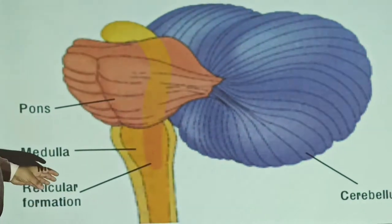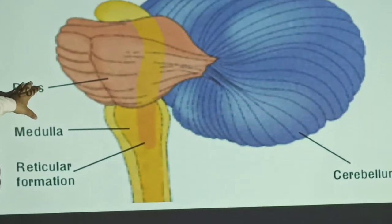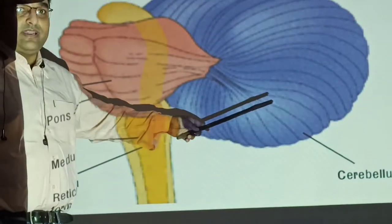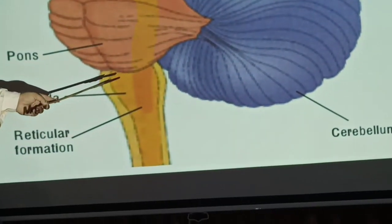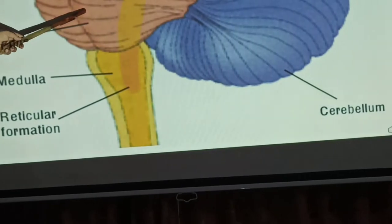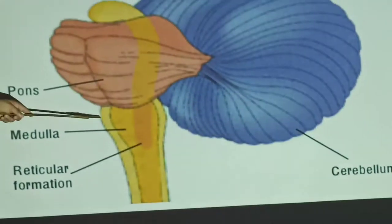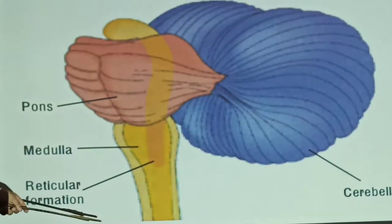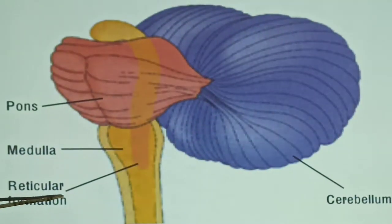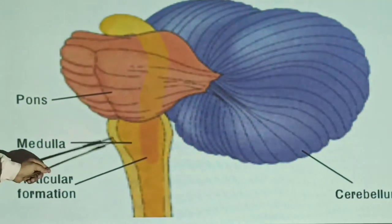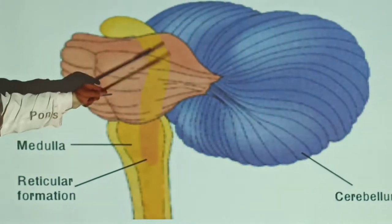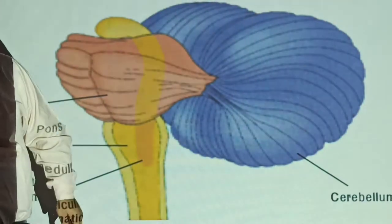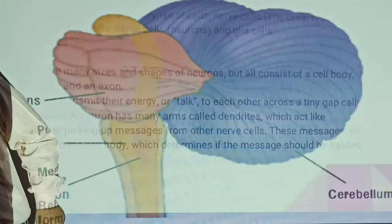The parts of the brainstem include the cerebellum, pons, and medulla. The last part is the reticular formation. These are the main structures of the brain.